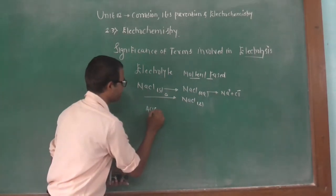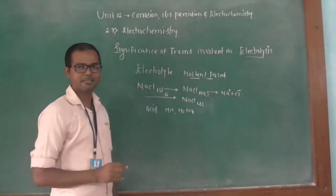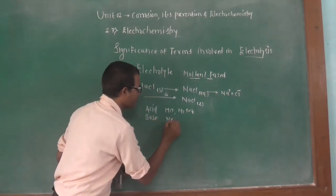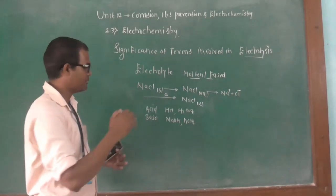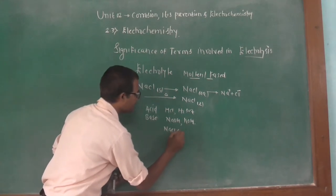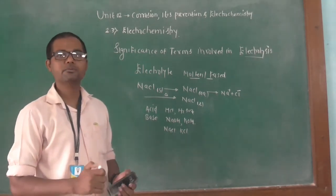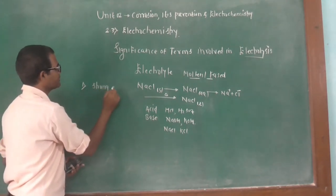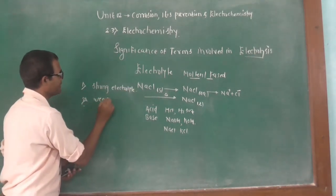Electrolytes are of two types: the first is called the strong electrolyte and the second is called the weak electrolyte. The electrolyte which is highly ionized in a solution — that is, having a high degree of ionization — is said to be a strong electrolyte. For example, mineral acids, which are strong acids, are highly ionized and have a tendency to produce more number of ions in a solution.